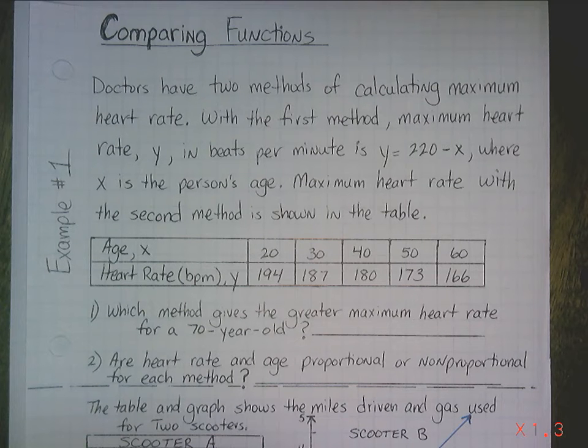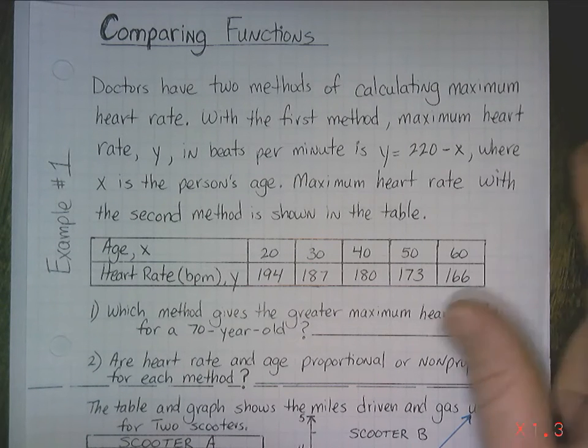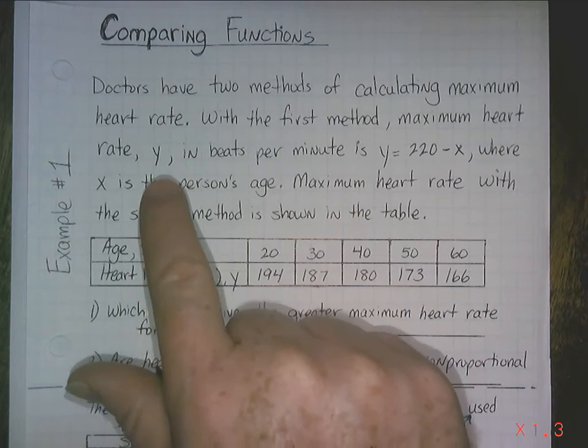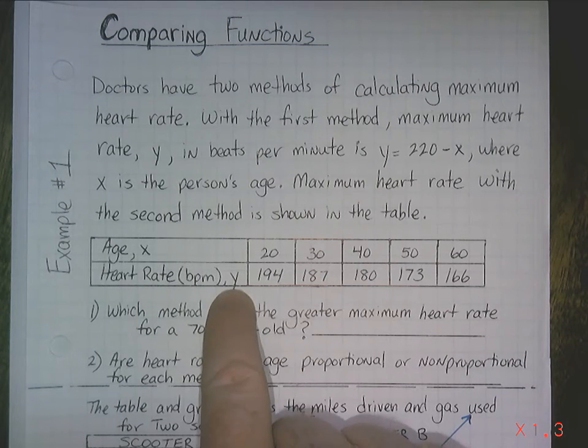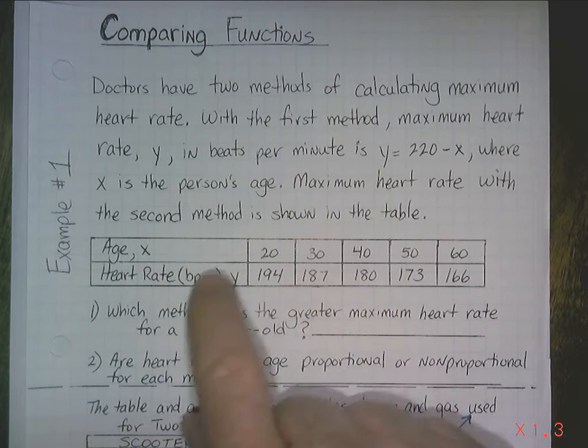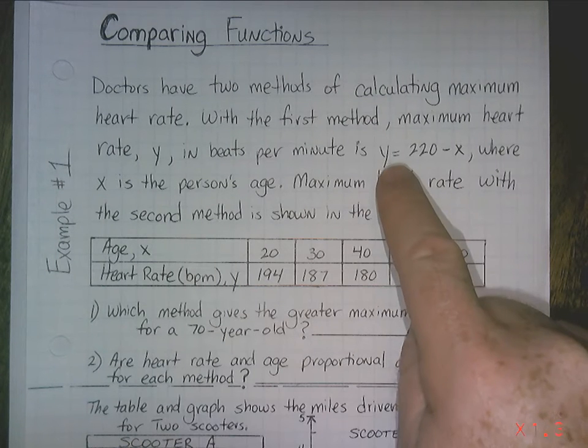We're not talking about exercising here, we're talking about a resting heartbeat being at a higher beat per minute rate. So they have two methods. The first method that they use to find a maximum heart rate, which again is Y. Y is the heart rate, beats per minute. X is based on the age, the person's age.